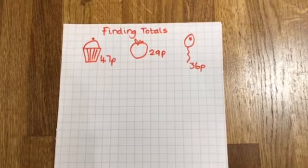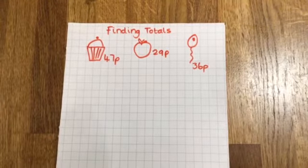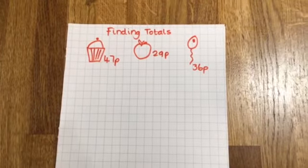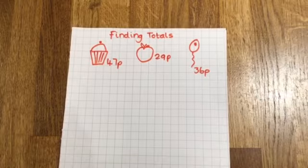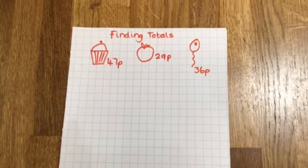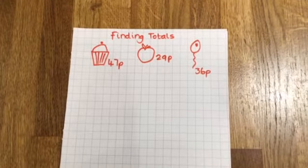Hello children. In today's lesson we're going to be finding totals and this is a really useful skill to have for when we go shopping because usually when we go shopping we buy more than one thing so we have to add up the cost of each item to find the total.